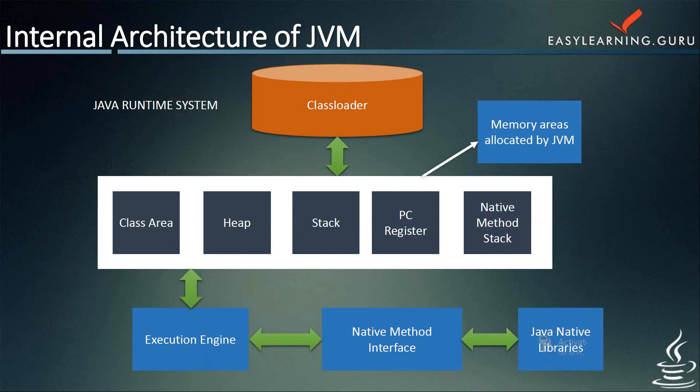JVM is a specification where the working of the Java Virtual Machine is specified. The implementation provider is free to choose the algorithm — implementation has been provided by Sun and other companies. JVM provides various definitions for the memory area, class file format, register set, Java heap, garbage collected heap, and fatal error reporting. Now, the class loader is a subsystem of the JVM used to load class files. The class area, also called the method area, stores per-class structure such as the runtime constant pool, field and method data, and the code for the methods.